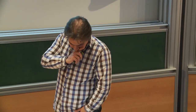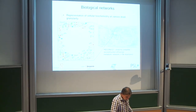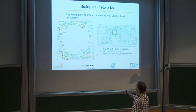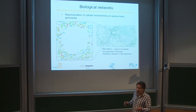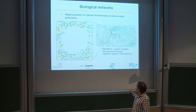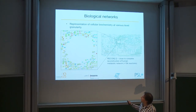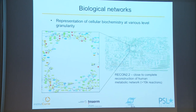Biological networks are basically an attempt to represent in graphical form — as graphs — the complex biochemistry happening inside a living cell. This is an example of a biological network representing a global reconstruction of all metabolic reactions happening inside a human cell. Currently this reconstruction contains more than 10,000 reactions. Formally speaking, it represents a bipartite graph. Small squares represent chemical reactions, and arrows show chemical substances which enter into or come out of the reactions.